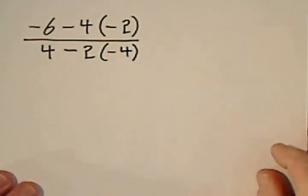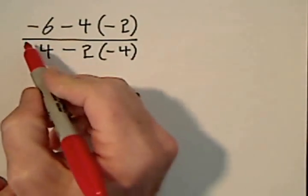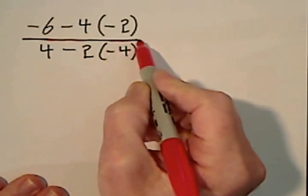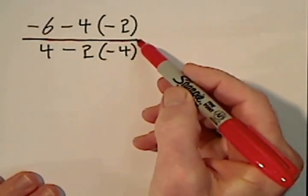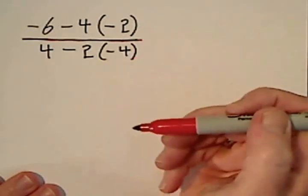All right, in order to simplify this rational expression we'll have to follow the order of operations. Keep in mind that this fraction bar or division bar is a grouping symbol as well as something that indicates that the numerator will eventually be divided by the denominator.